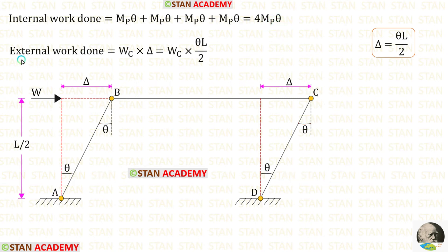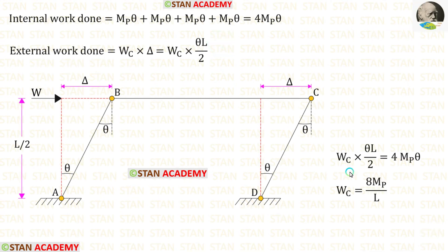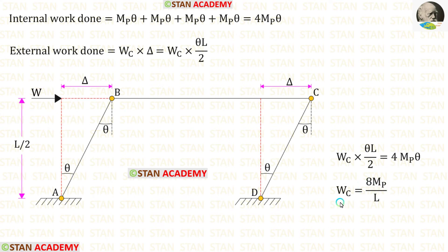Now let us find the external work done for the sway mechanism. We multiply the load W by the displacement delta, substituting delta equals theta L upon 2. Equating internal and external work done and eliminating theta, taking 2 to the other side gives 2 times 4 equals 8. So the collapse load Wc equals 8 MB upon L.